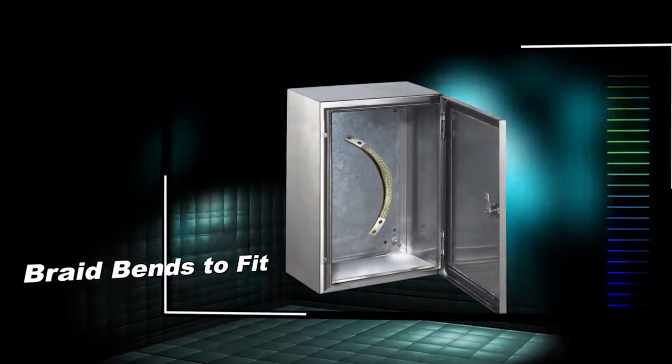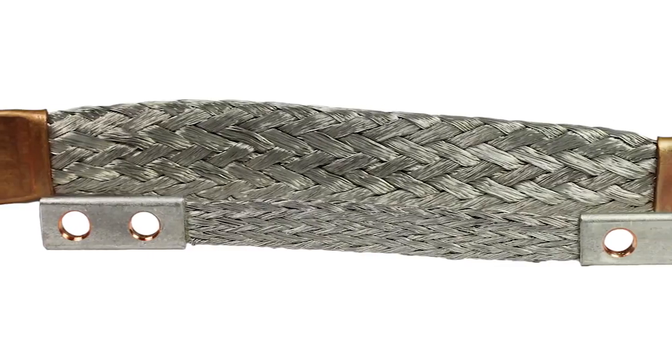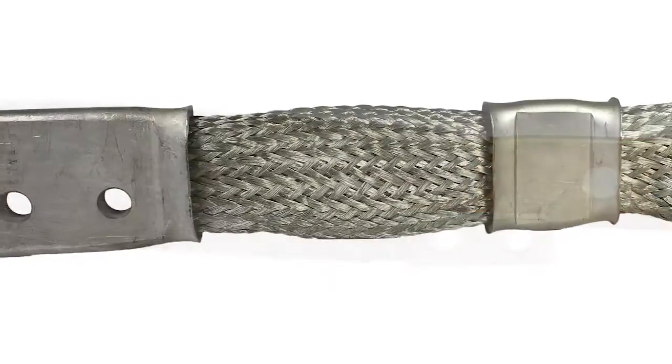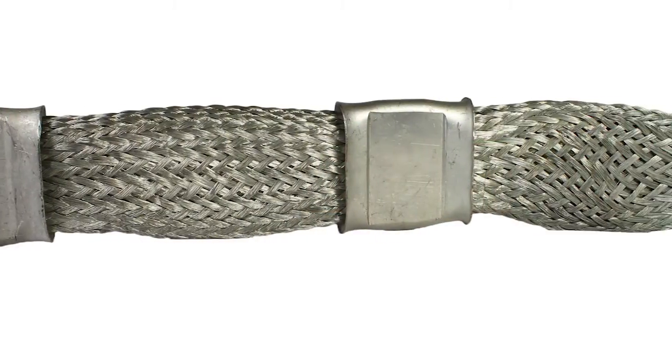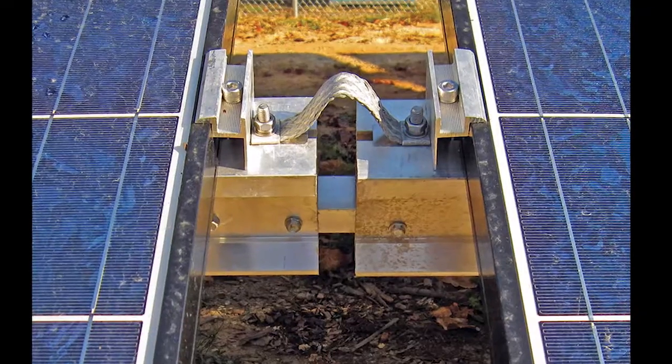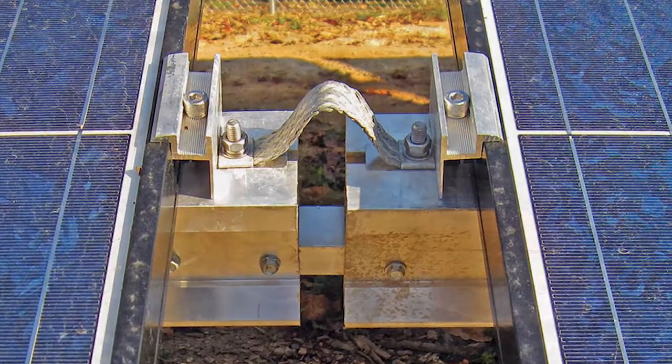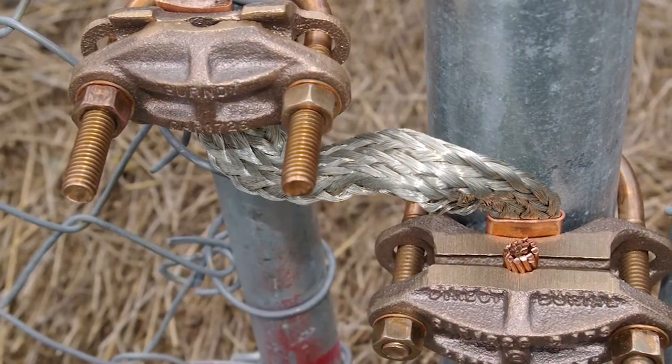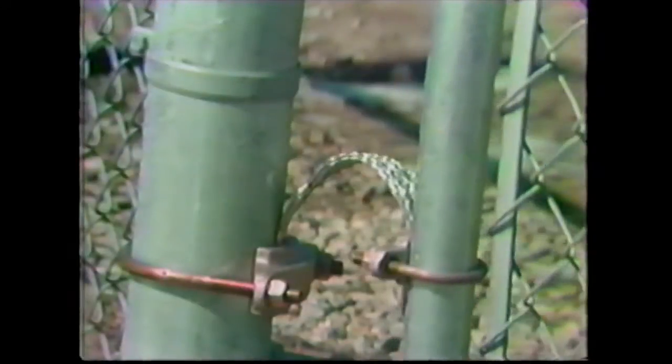As one of our signature products, Burndy offers braid assemblies, an economical and efficient means of protecting electrical equipment from the potentially harmful effects of shock and vibration and movement of components, misalignment that may occur during the service life of electrical equipment and machinery, and seasonal movement of outdoor equipment.